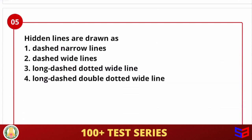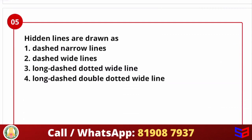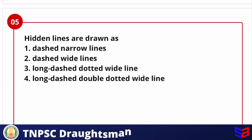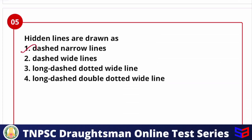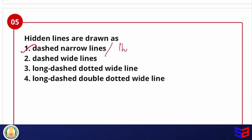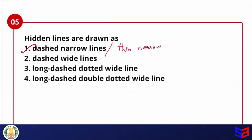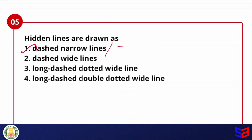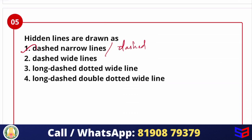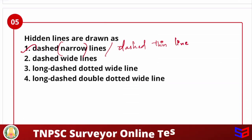Next question: Hidden lines are drawn as — dashed narrow line, dashed wide line, long dashed dotted wide lines, or long dashed double dotted wide lines? Hidden lines are usually drawn as dashed narrow lines, that is dashed thin lines. The answer is dashed narrow (thin) lines.